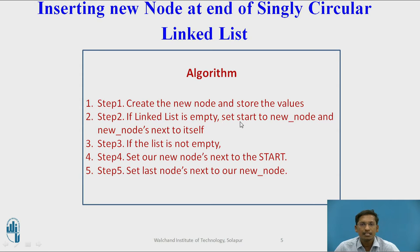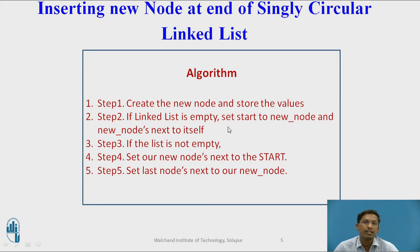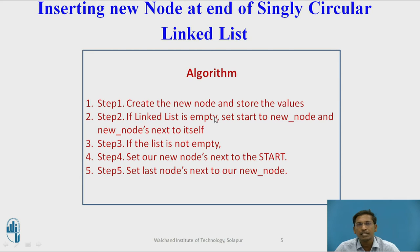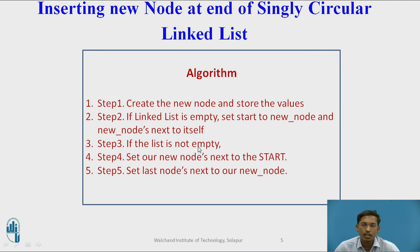Step 2: If the linked list is empty, set the start value to the new node and the new node's next part will point to the same node itself. If the linked list is empty, meaning no nodes are present previously, then whatever new node you are inserting at the end will become the only node in the singly circular linked list. So start points to new node and new node's next pointer holds the address of the same node.